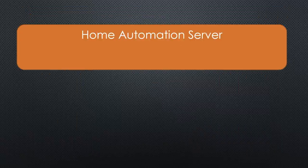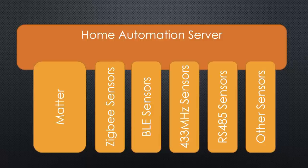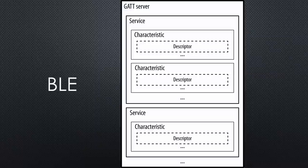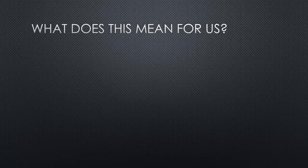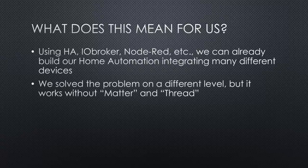We now have a complete picture of our preferred home automation server, the Matter environment, and all the existing devices in parallel. Current devices use many protocols for communication as well as a multitude of data structures. Matter devices use Thread and Wi-Fi for communication. All devices only need one integration into home automation because the standardization is done inside the Matter framework — very similar to BLE, where we can use standardized GATT profiles for all sorts of services. Using our preferred integration platforms like Home Assistant, IO Broker, Node-RED, etc., we can already build our home automation integrating many different devices. We solve the problem on a different level, but it works without Matter and Thread.